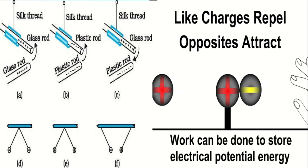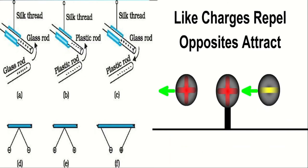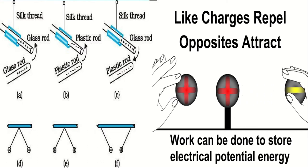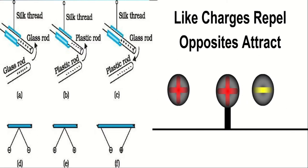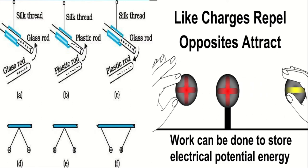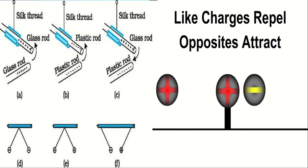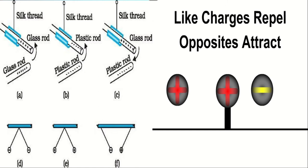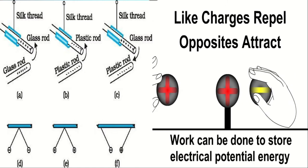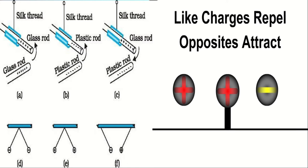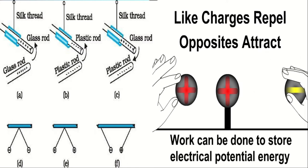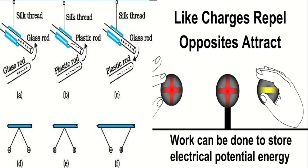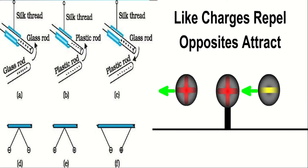A dramatic observation is that a pith ball touched with the glass rod attracts another pith ball touched with the plastic rod, as per figure F. These seemingly simple facts were established from years of careful experiments and analysis. It was concluded that there were only two kinds of entity called electric charge — like charges repel and unlike charges attract each other. Work can be done to store electrical potential energy.